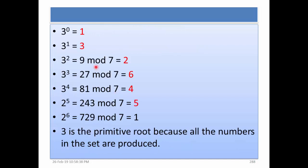Now we test 3. 3 to the power 0 is equal to 1, 3 to the power 1 is equal to 3, 3 to the power 2 is equal to 2. Similarly we get 6, 4, 5, and 1. So as you can see that except 0, all the numbers in the set have been produced: 1, 2, 3, 4, 5, 6. Therefore 3 is the primitive root because all the numbers in the set are produced.